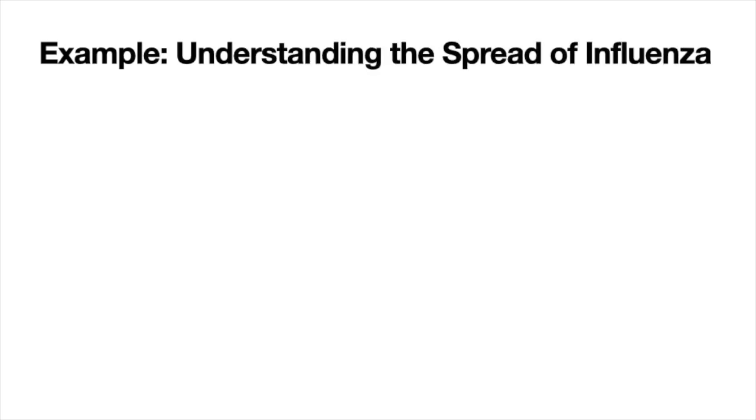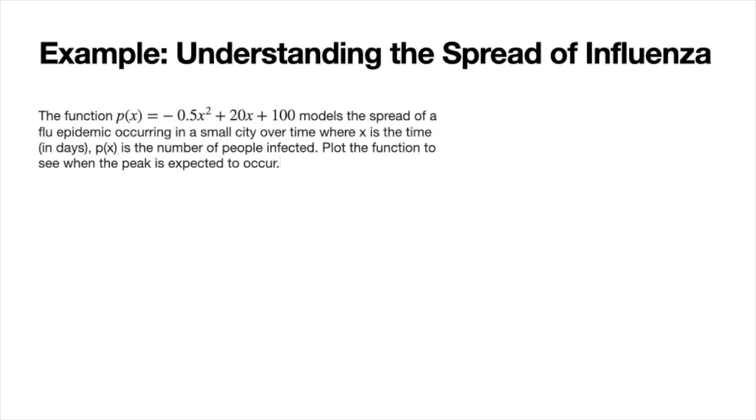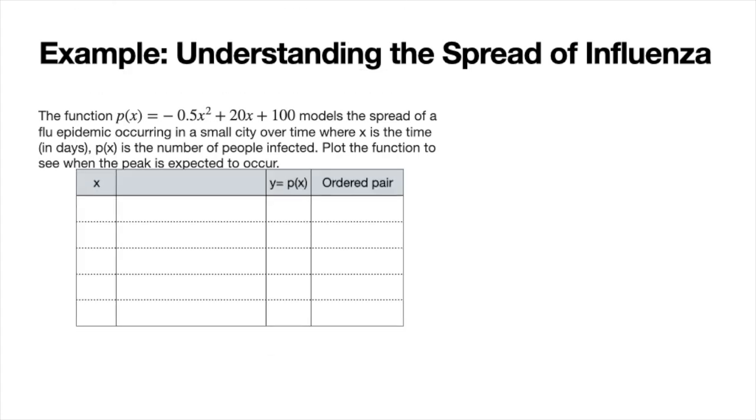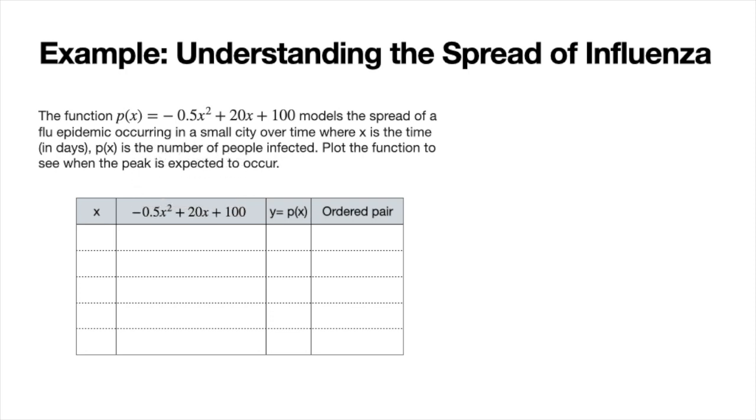Let's just do a quick example, just to hopefully solidify a lot of these things. Let's talk about the spread of influenza. Let's say that we have this function. Its name is P, where P of x just tells you the number of people that are infected. And that x here, this represents time in days. So when people get this flu, the number of people getting sick, it can be described by this function here. We want to plot this and see where the peak occurs, when we expect the most number of people to get sick. We can do our table of values here. And I just want you to take about a minute to try to fill out a couple of these.